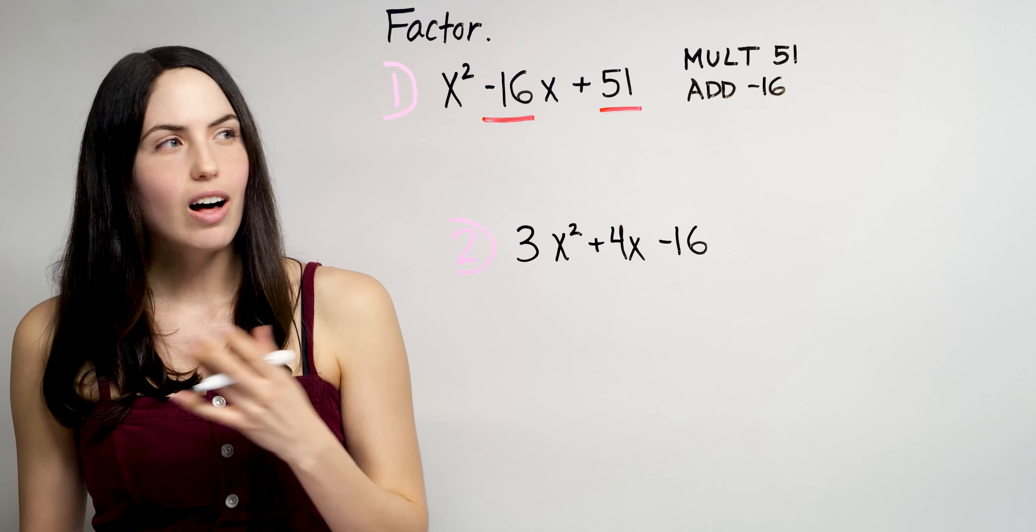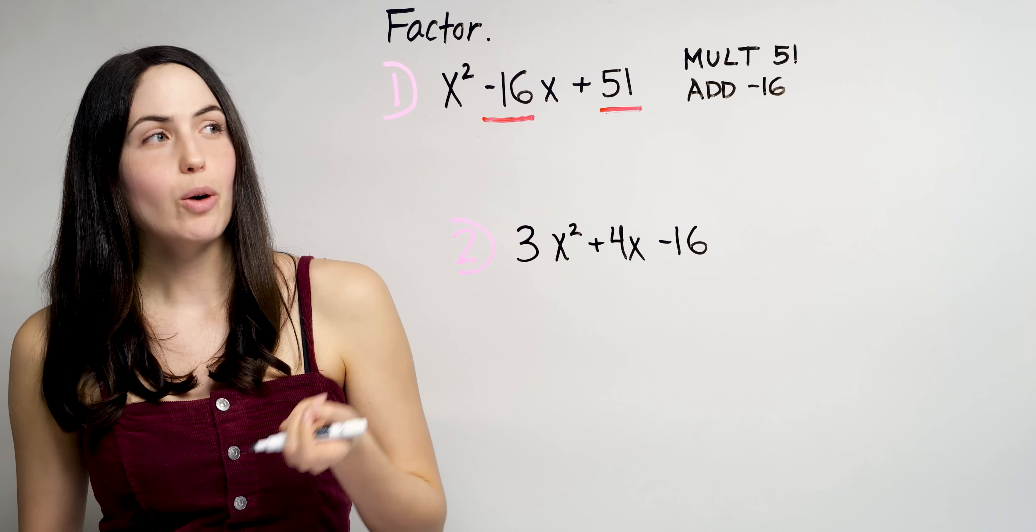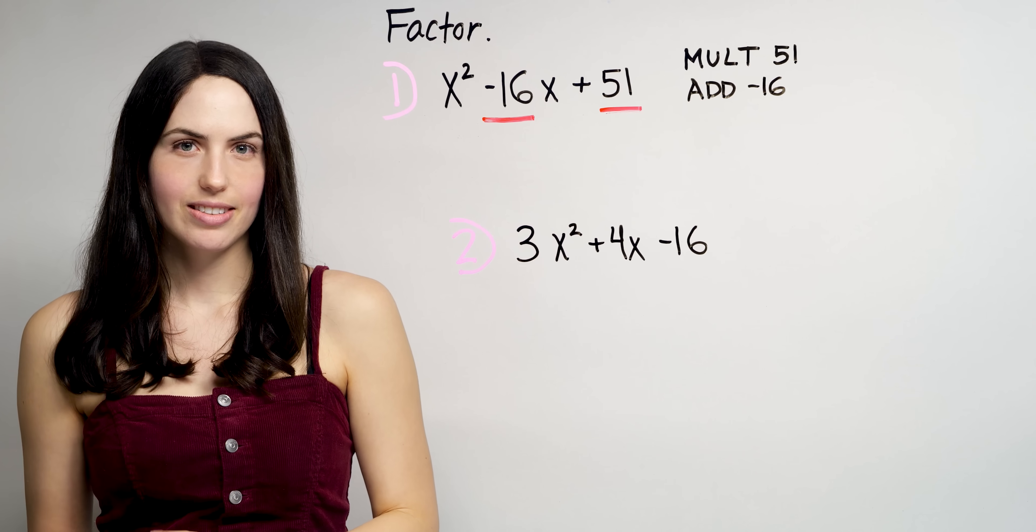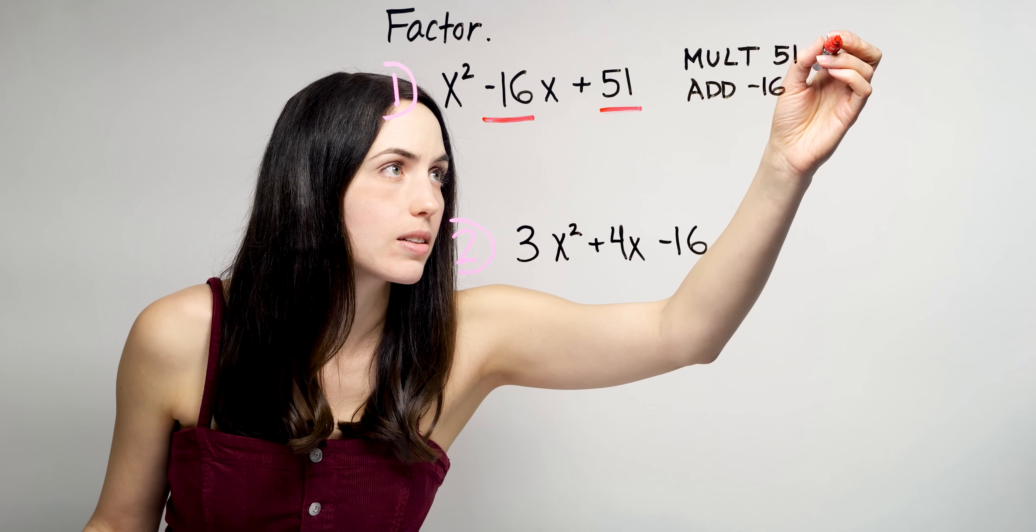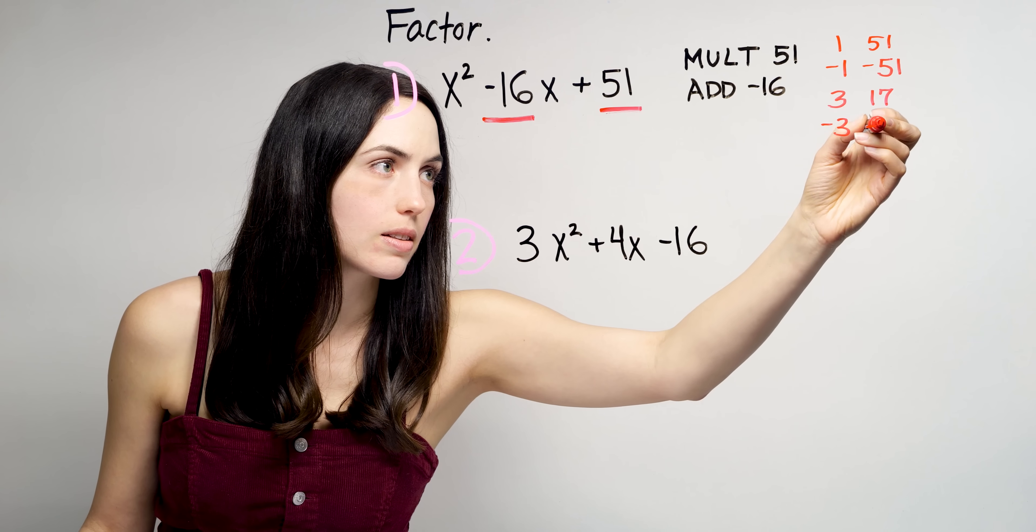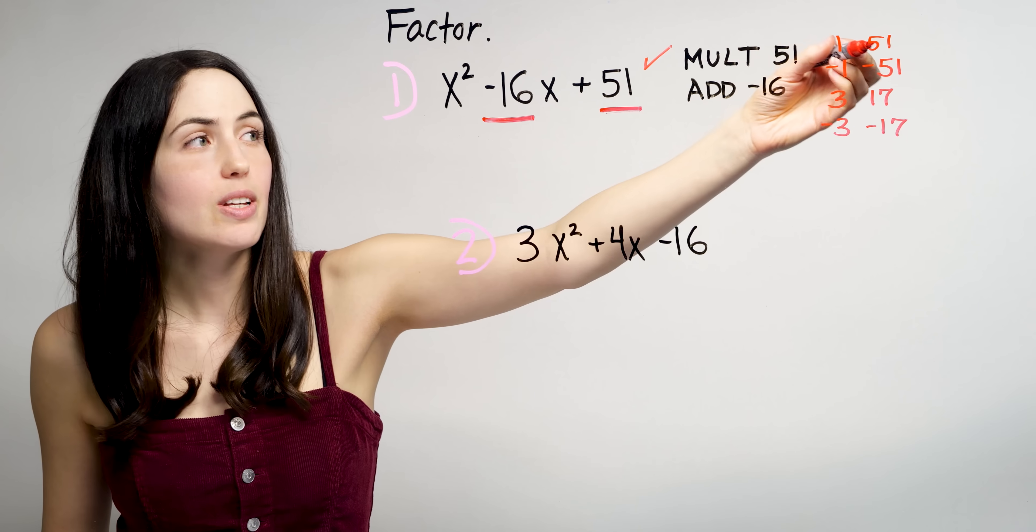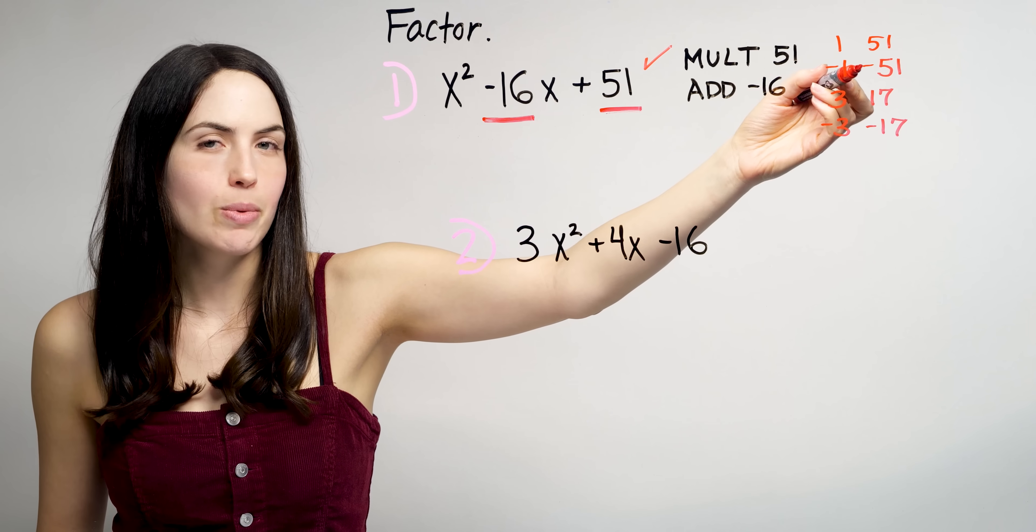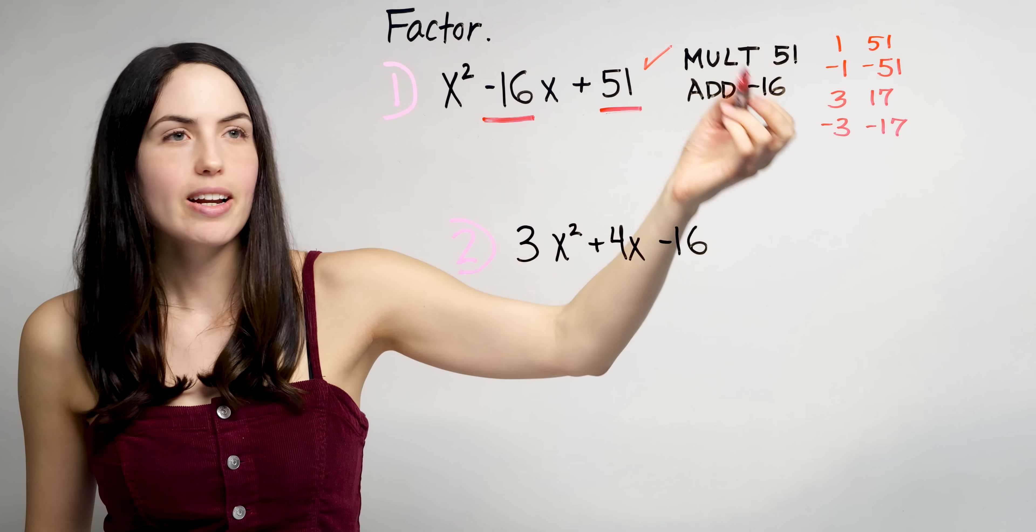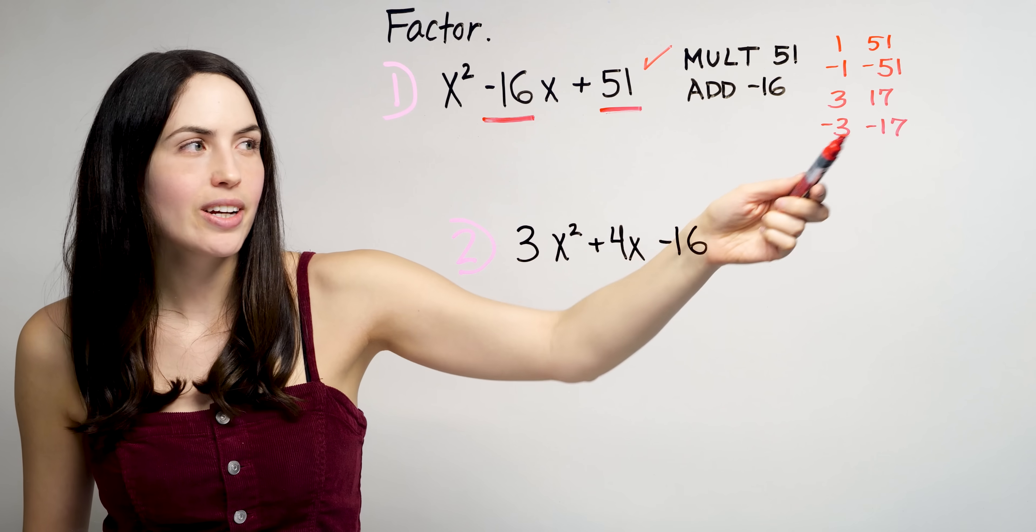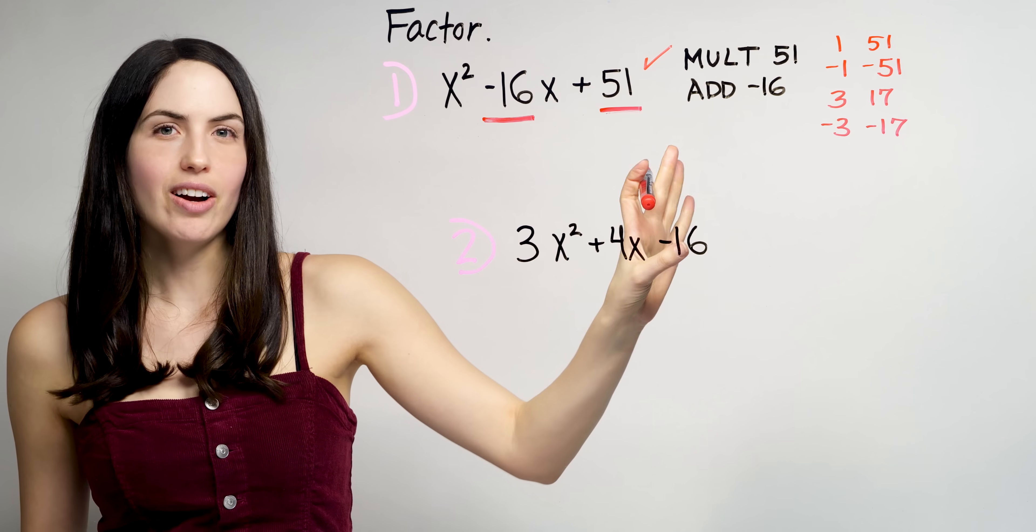So first, think of all the numbers, all the pairs of numbers that would multiply to give you 51, and list them over here. So we could have 1 times 51 gives us 51, or flip both sides, two negatives multiplied to a positive. We could have 3 times 17 gives us 51, or negative 3, negative 17. Those are all our options.